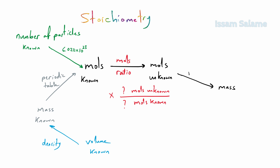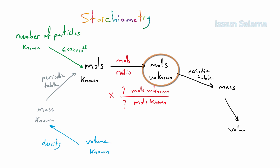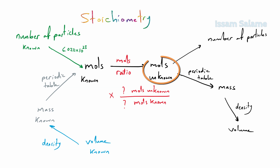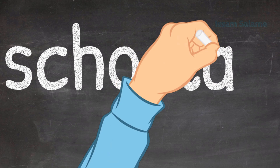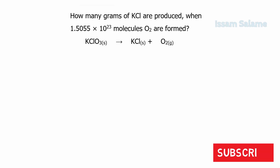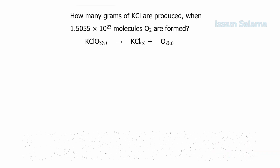If you want to calculate the mass of the unknown quantity, convert moles of the unknown to mass using the periodic table. If you want to calculate volume, convert moles of the unknown to mass first using the periodic table, then from mass to volume using density. If the amount to be calculated is number of particles, convert moles of the unknown to number of particles using Avogadro's number — 6.022 × 10²³. Now let's do one more stoichiometry number-of-particles problem.